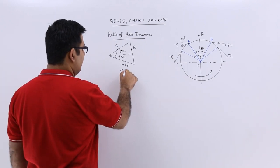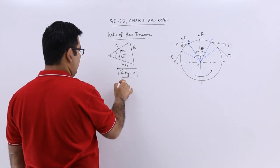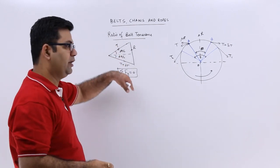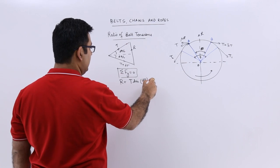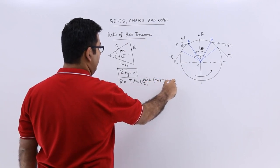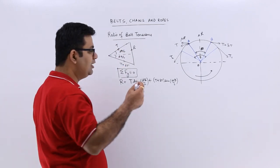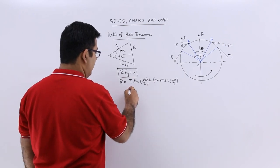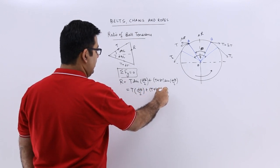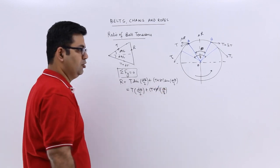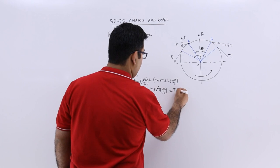We consider equilibrium in the vertical direction: ΣFy = 0. The vertical force here is R. You will have a vertical component of T in the downward direction, which becomes T·sin(dθ/2), plus (T + δT)·sin(dθ/2), because the sine component of T + δT is also vertically downward. Since dθ/2 is a very small angle, sin(dθ/2) ≈ dθ/2. So you get T·dθ/2 + T·dθ/2, and the term dθ/2·δT can be neglected, giving approximately R = T·dθ.